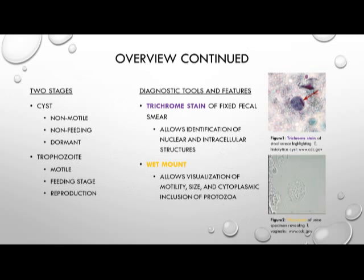The intestinal protozoa can be found in two different stages. The first, the cyst stage, is the stage which the organism goes into when it is in an environment that is not conducive to growth or reproduction. It is a hardier stage, usually more heat tolerant for long-term dormant stages, and the organism in the cyst stage is non-motile, non-feeding, and dormant. Once the environmental conditions become conducive to growth, the trophozoite stage will develop from the cyst stage, and this is a motile stage that allows for feeding and reproduction.